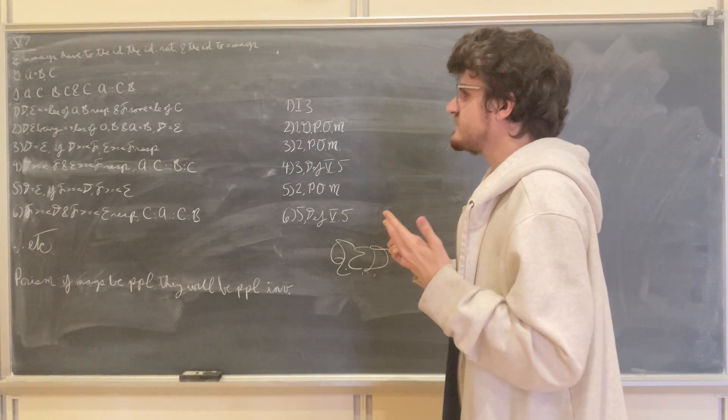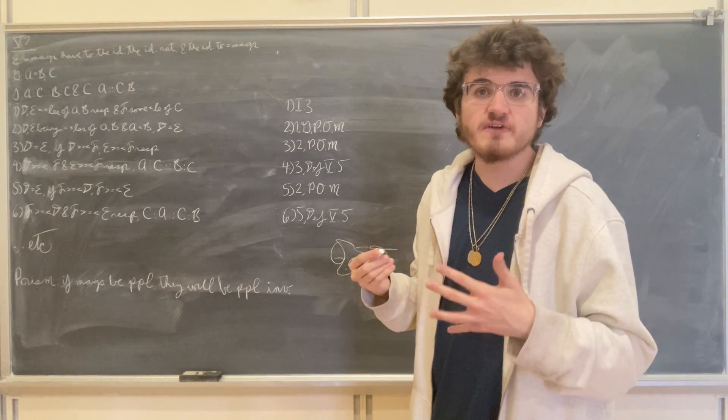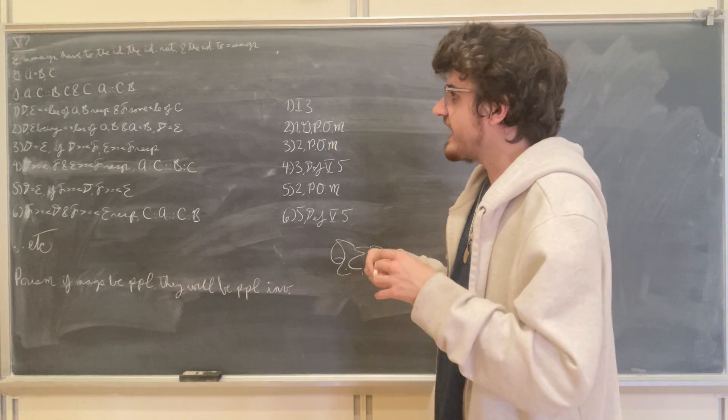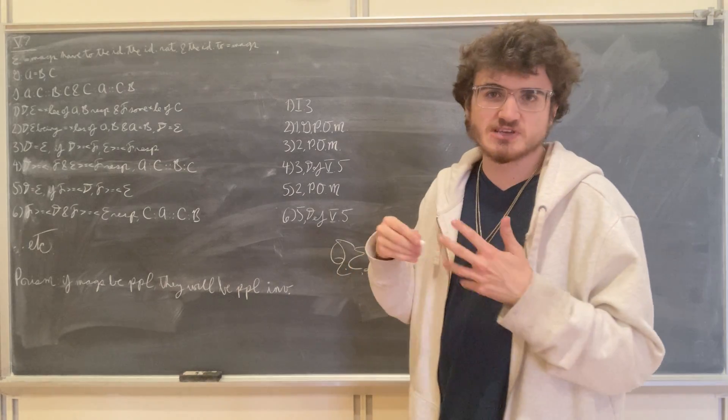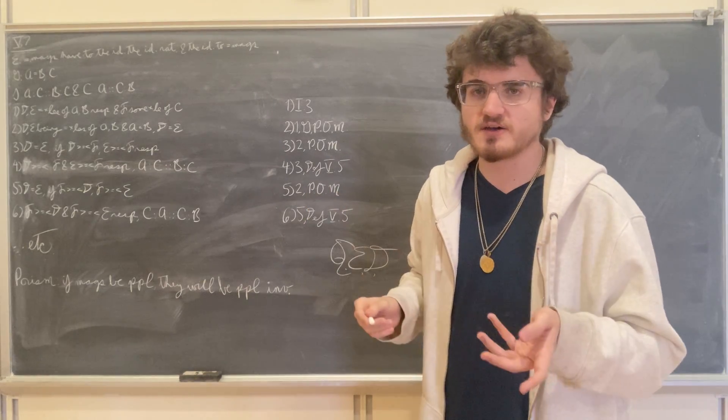We're going to begin by taking equal multiples D and E of A and B respectively, and we're going to take of C some multiple F. It doesn't matter what the value of this multiple is.